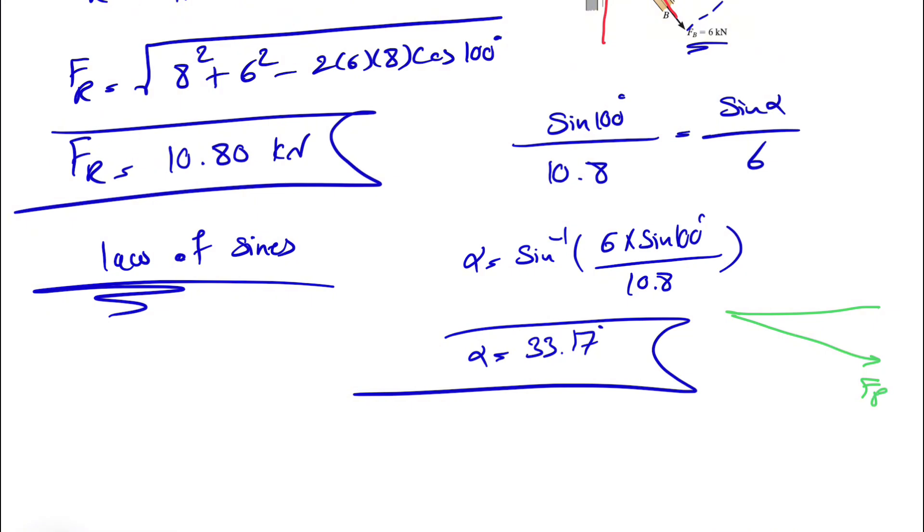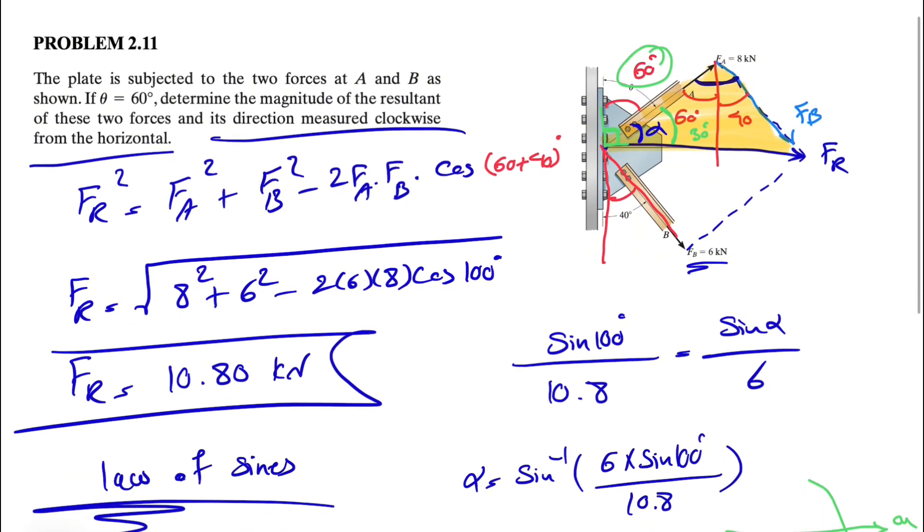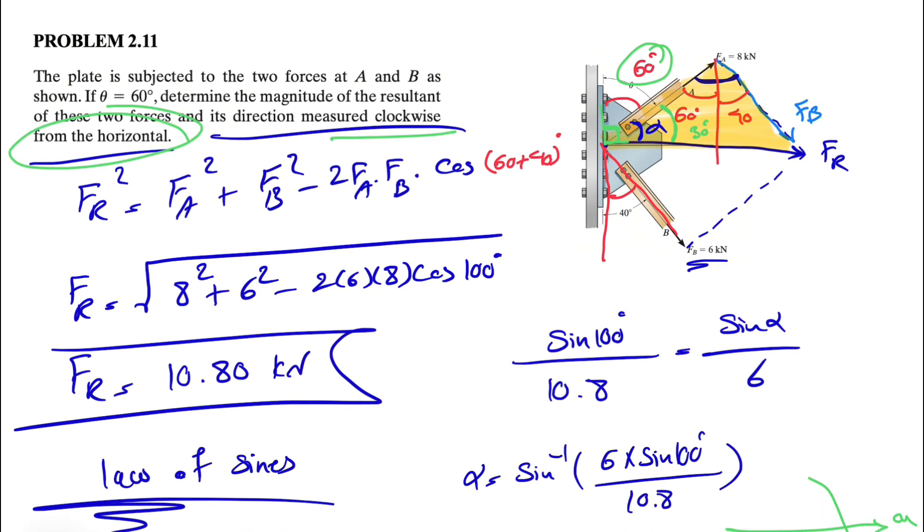So if you want to show it, this would be our FR in a larger scale. And we can call this one X or horizontal. And the angle that we have in here is the angle that the question is asking since we are moving clockwise. So the angle that we are looking for is angle phi in here, which basically would be 33.17 degrees minus 30, which will be 3.17 degrees or the angle measured clockwise from the horizontal.